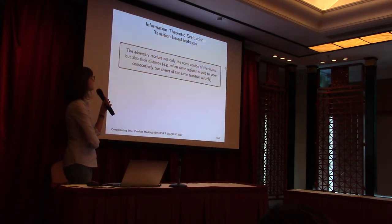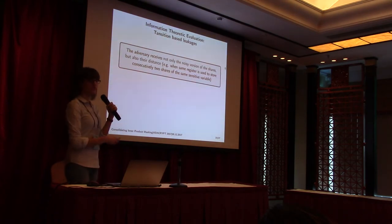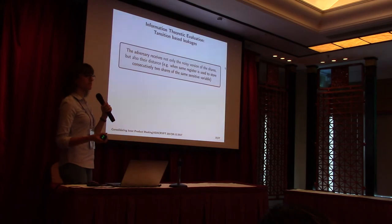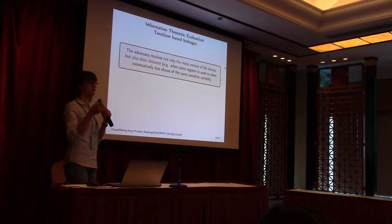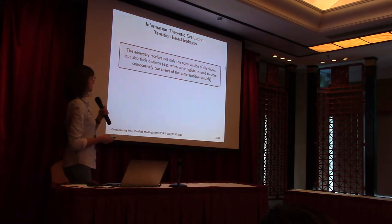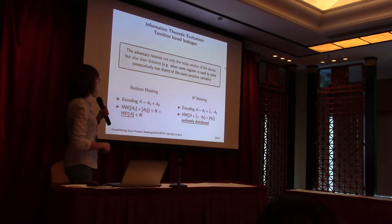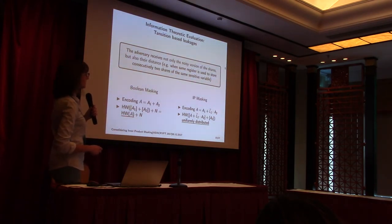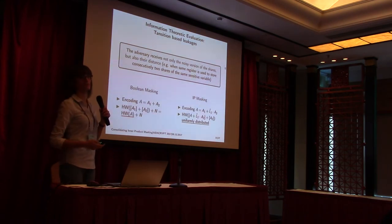We also studied transition-based leakage. This happens when an adversary receives not only the noisy version of the shares but also the Hamming distance, occurring when registers are used consecutively to store two different shares of the same value. For Boolean masking, the Hamming weight of the XOR of A1 and A2 reveals the Hamming weight of A, which vanishes the masking protection. In our IP masking, the presence of L makes the Hamming distance uniformly distributed, so we see no evidence of leakage in transition-based leakage.